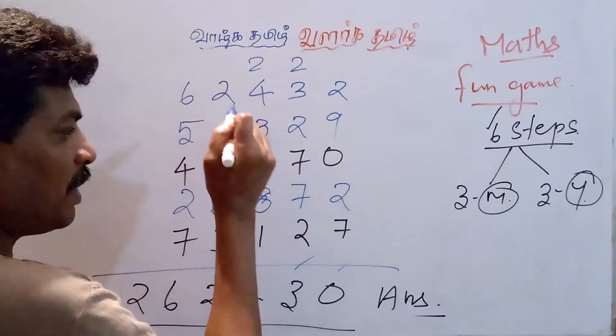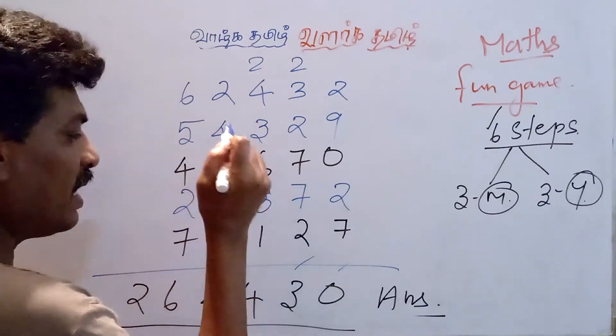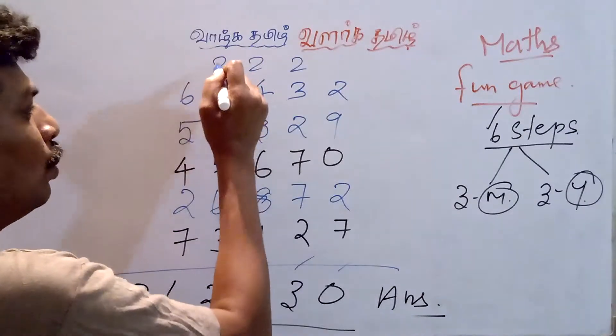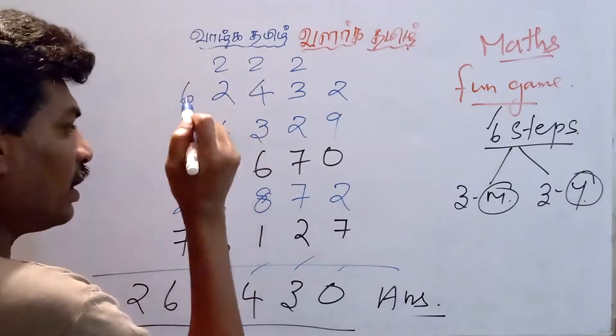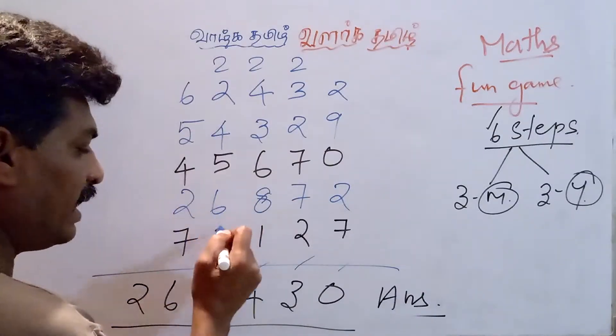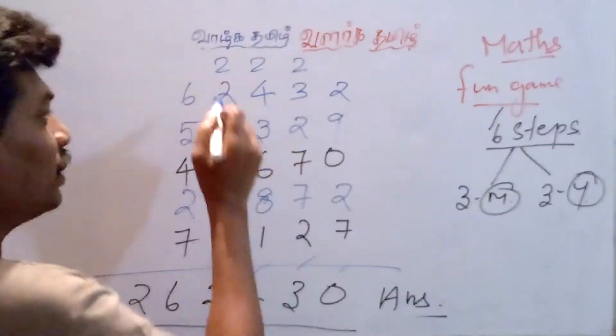2 plus 4 is 6, plus 3 is 9, plus 6 is 15, plus 8 is 23, plus 1 is 24. Carry over 2. 2 plus 2 is 4, plus 4 is 8, plus 5 is 13, plus 6 is 19, plus 3 is 22. Carry over 2.